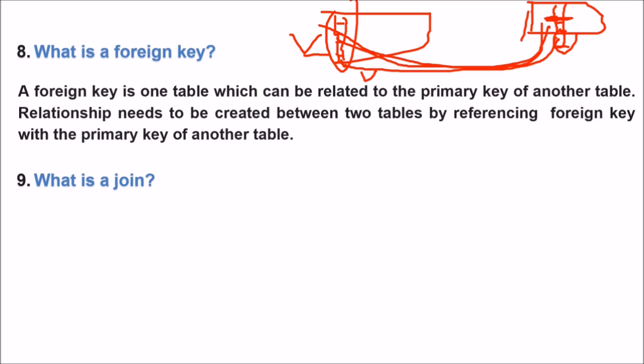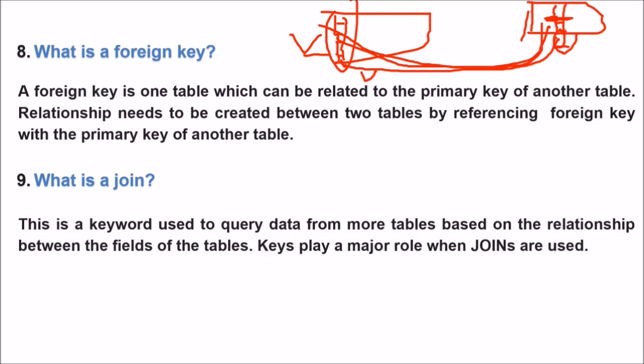What is a join? A join is a keyword used to query data from more than one table, because queries often require data from multiple tables. Those tables are combined using a join. It is a keyword used to query data from more tables based on the relationship between the fields of those tables, and keys play a major role when joins are used.